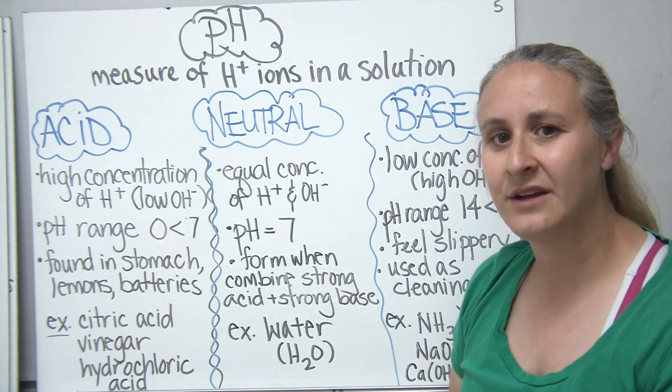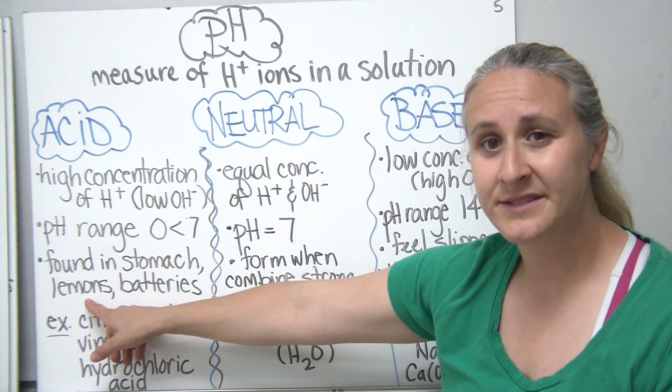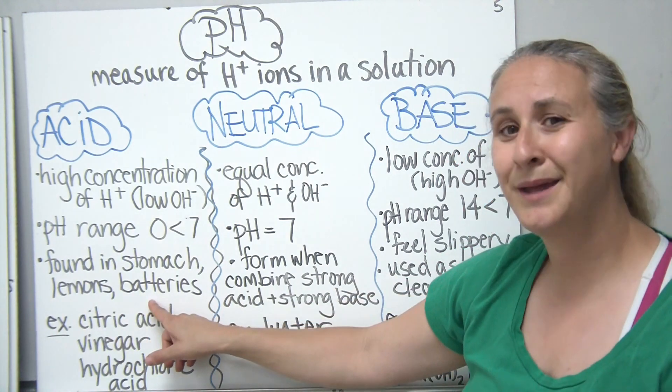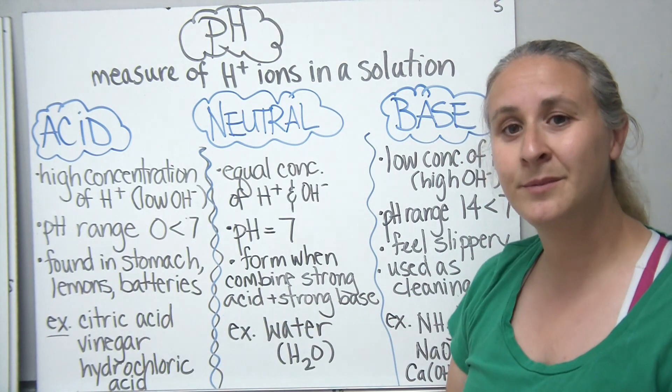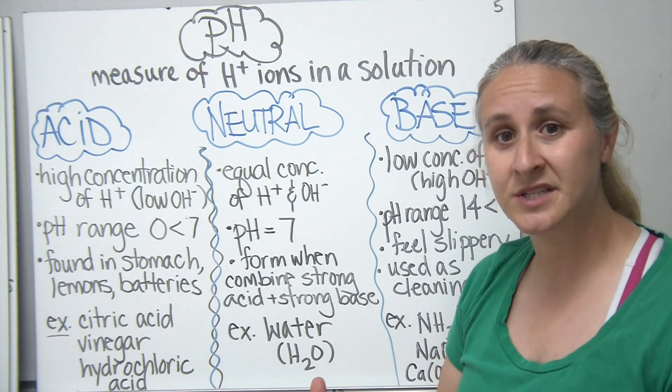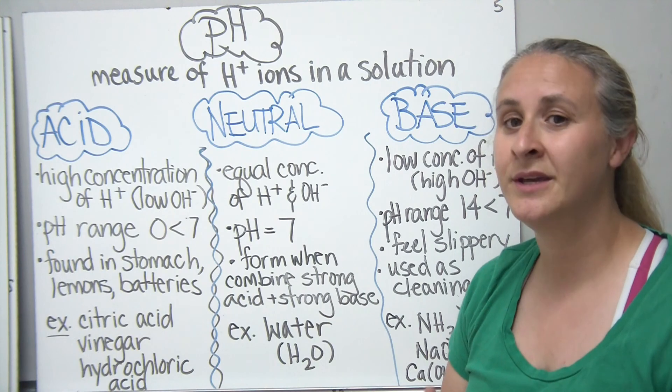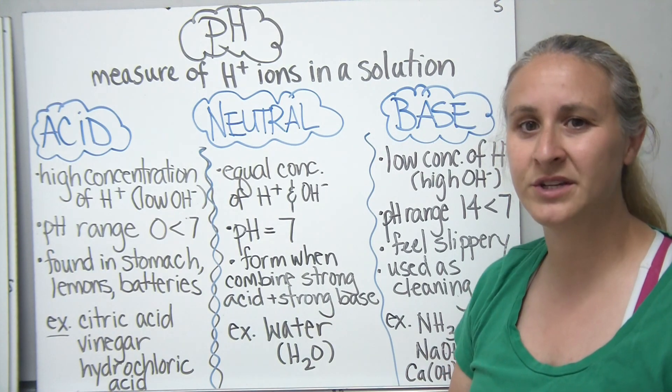The pH range for an acid is anywhere from zero to less than seven. Acids are typically found in the stomach, hydrochloric acid. Lemons have acids in them, and batteries have acid. Anybody that's ever worked on cars or worked with batteries, if a car battery explodes, you could actually have some very serious burns from it.